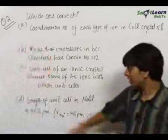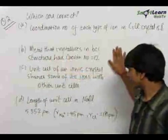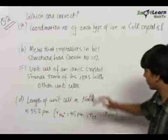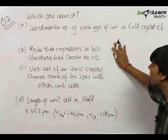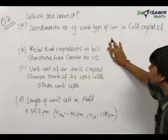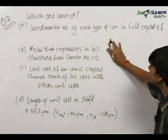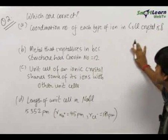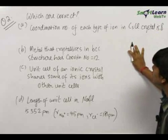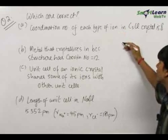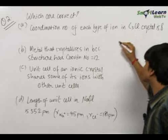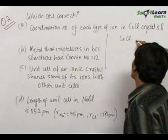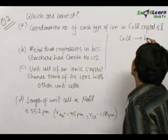The second question appeared in JEE some time back. They always try to test a lot of things in a single question, so they have put in four options. The first part states that the coordination number of each type of ion in CsCl crystal is 8. For solving this question, you must first know the structure of CsCl, which is body-centered cubic.